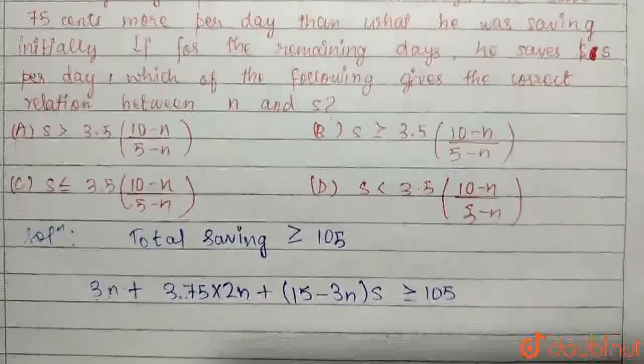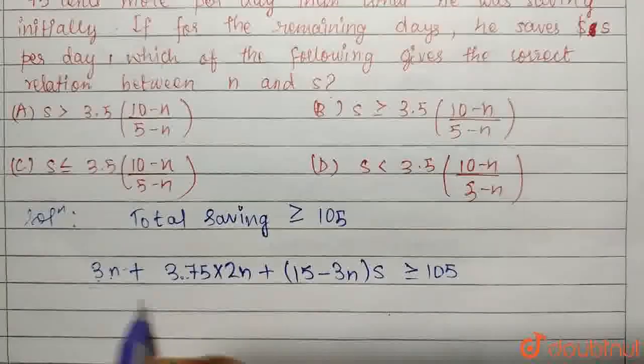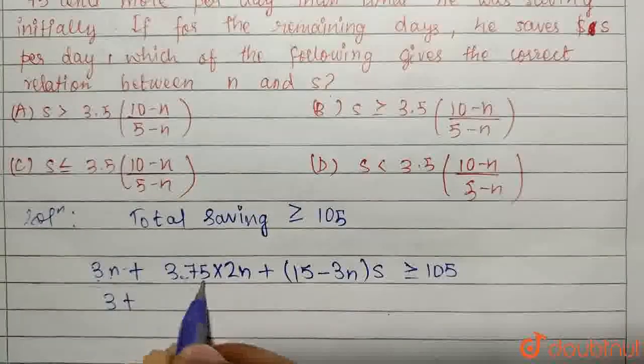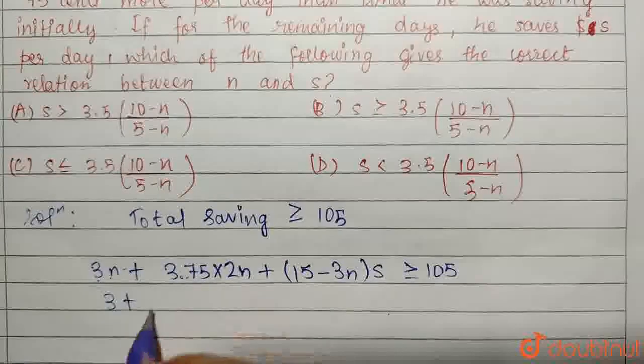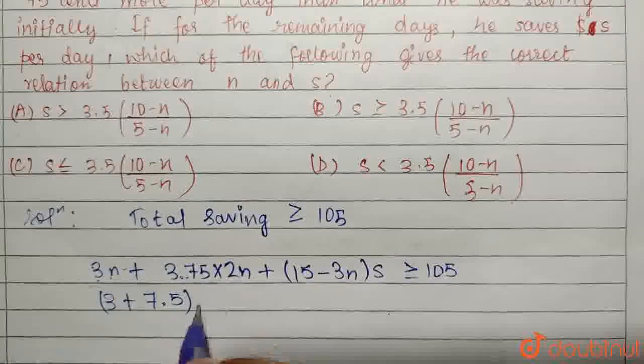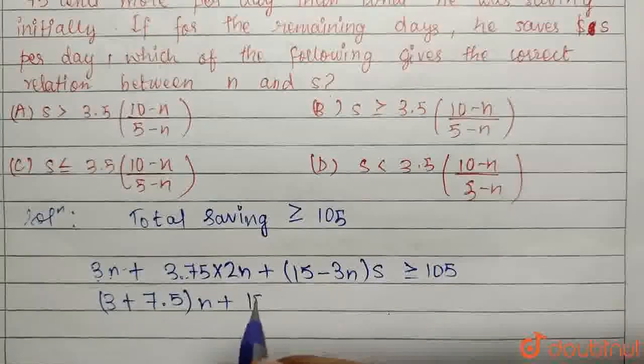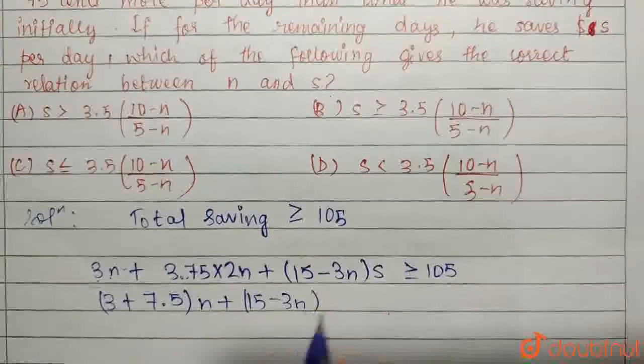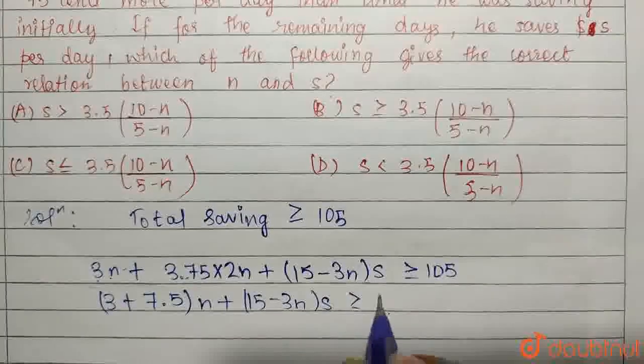Now I will solve this for the value of S. So for that we have 3 plus 2 into 3.75 is 7.5. We take N common, N plus writing 15 minus 3N, S is greater than or equal to 105.